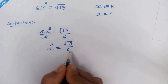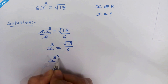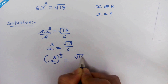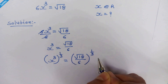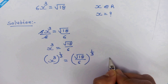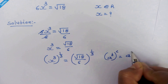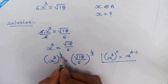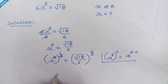In the next step, we will raise both sides to the power of 1/3. So we have x³ whole raised to 1/3 equals √18 / 6 whole raised to 1/3. We need to recall the rule: if we have a^b whole raised to c, then it equals a^(b × c). Applying this rule, the exponents multiply and cancel out, giving us x on the left side.